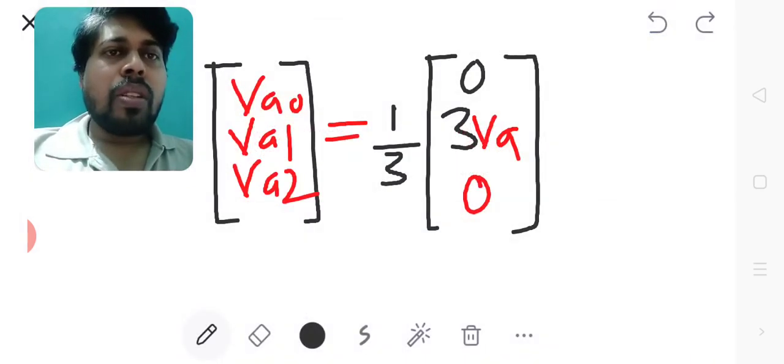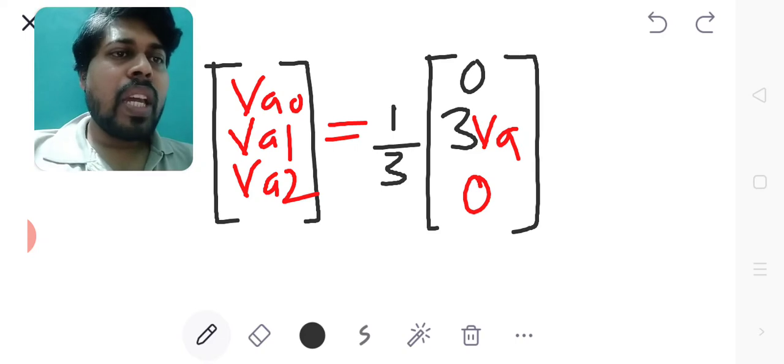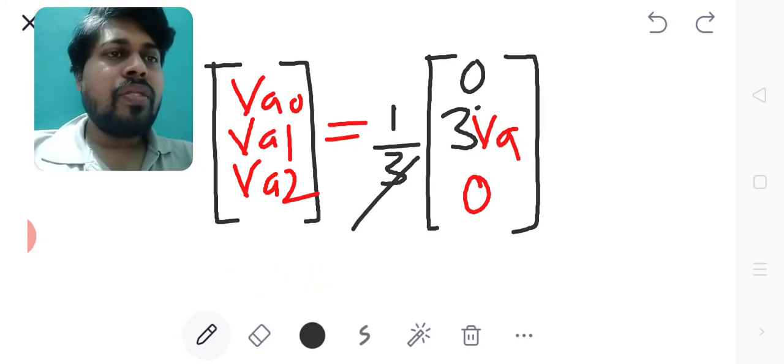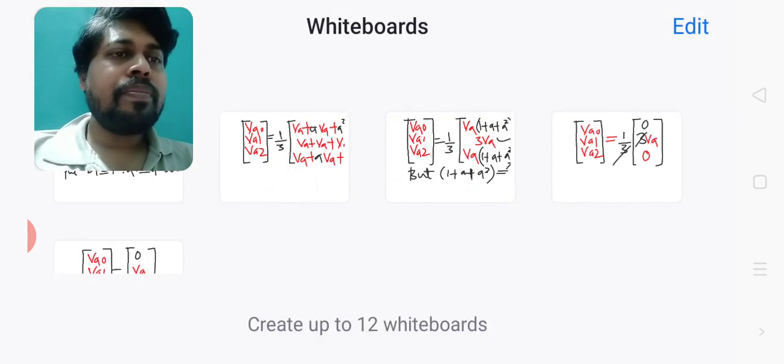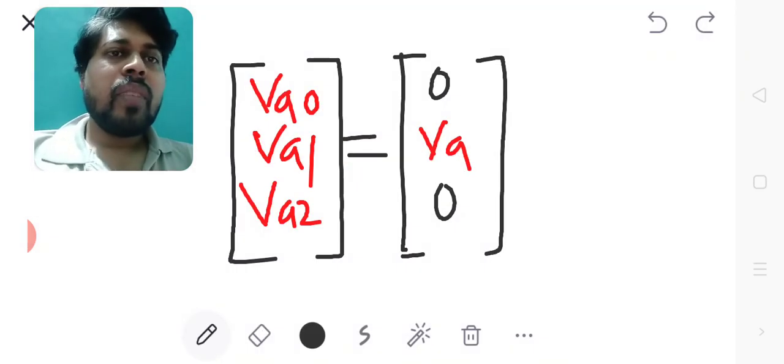We will get VA0 VA1 VA2 equals 1 by 3 into 0, second row is 3 into VA, third row is 0. Here 3 and 3 get canceled, so remaining is VA0 VA1 VA2 equals 0, VA, and 0.